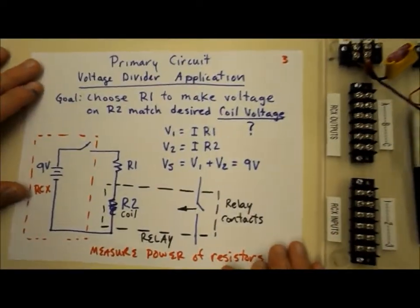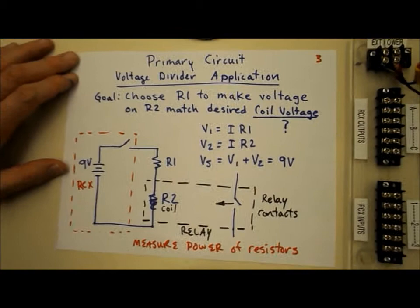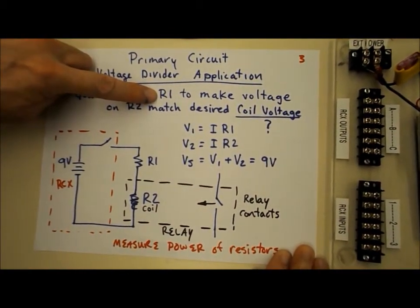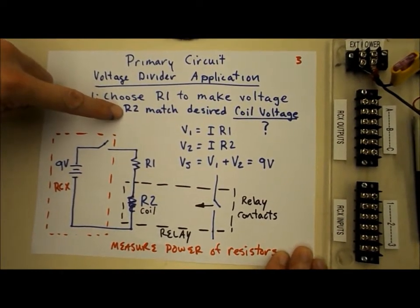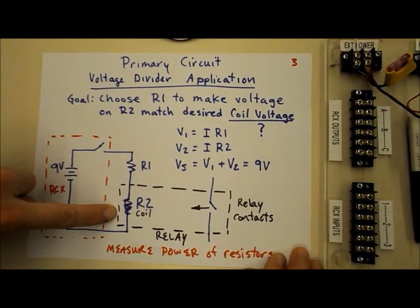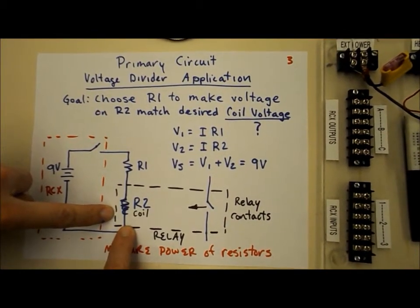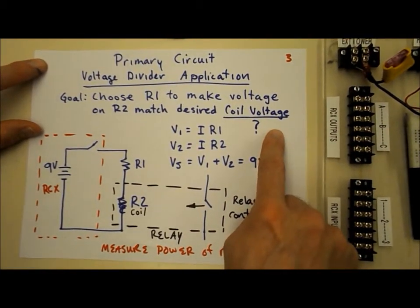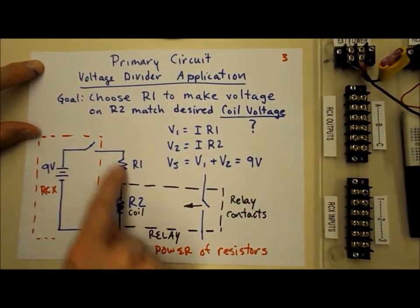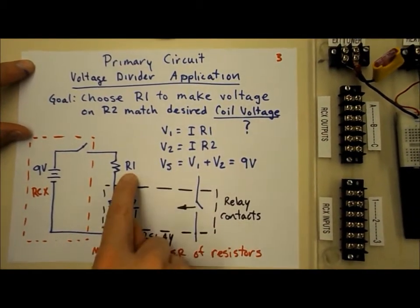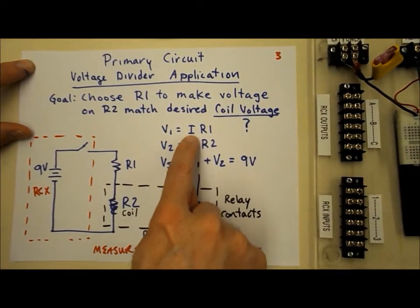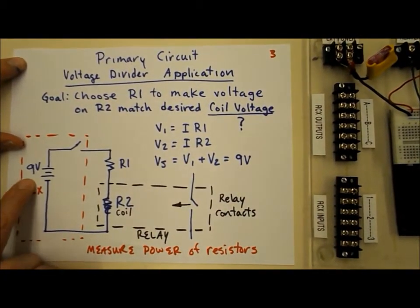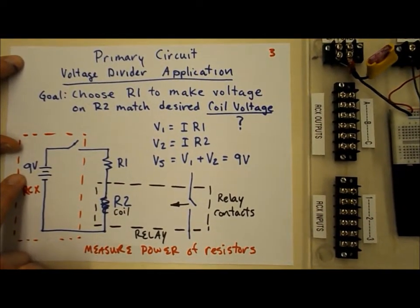Now, let's talk about that primary circuit, what the RCX is going to do for us. The goal for this voltage divider application is to choose R1 such that the resistance of the coil, or R2, shown here, creates the desired voltage drop across this coil, the coil voltage that you're going to get from the datasheet. I've got a question mark here because you need to find out what that is from the datasheet. For this voltage divider circuit, the voltage on each resistor is given by Ohm's Law, current times resistance. The voltage source is our RCX, which, as we found last week, provides about 9 volts.